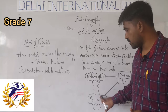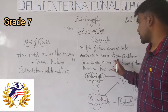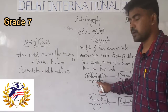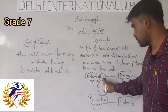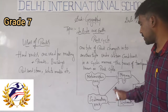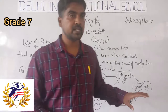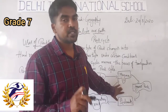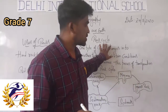Sedimentary rocks, once again due to certain conditions, turn into metamorphic rock. Then metamorphic rock or sedimentary rock can turn back into magma. This entire process is known as the rock cycle.